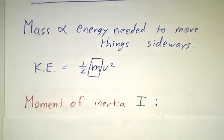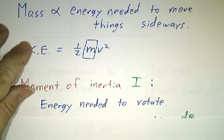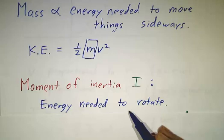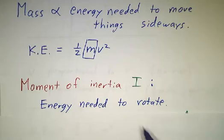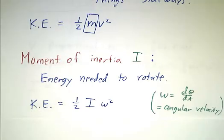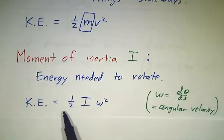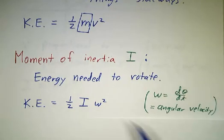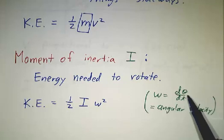Now, the moment of inertia is the same sort of thing for rotation. It's usually denoted by the letter I, and it's the energy needed to rotate at a given rate. In particular, the formula is that the kinetic energy is 1/2 the moment of inertia times the angular velocity squared. The angular velocity is the rate at which the angle is changing.